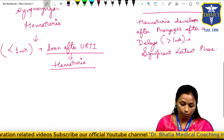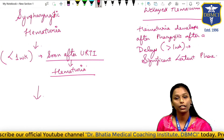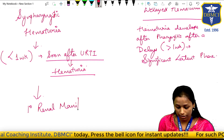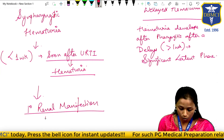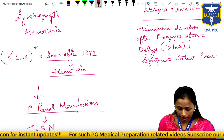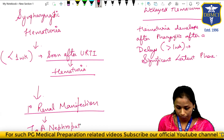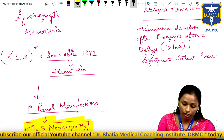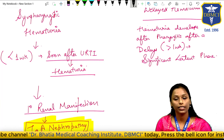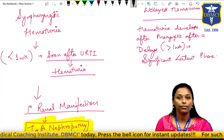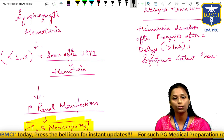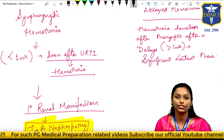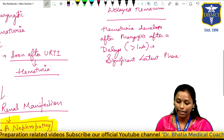Coming to the first type — synpharyngitic hematuria — if the primary renal manifestation is hematuria occurring soon after upper respiratory tract infection without any delay, the most likely diagnosis is IgA nephropathy, which is also known as Berger's disease.